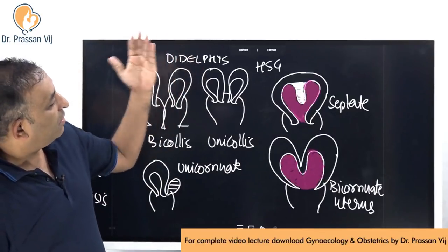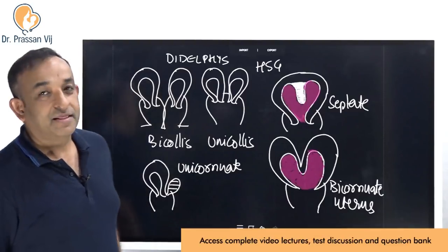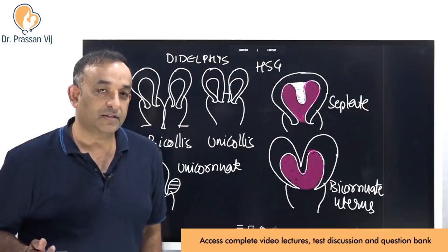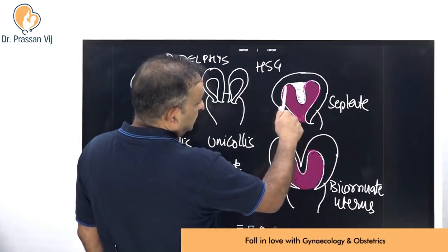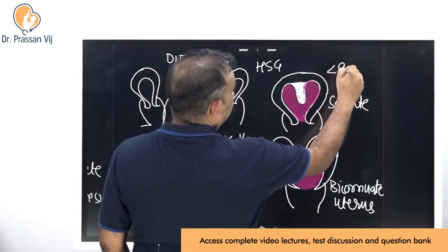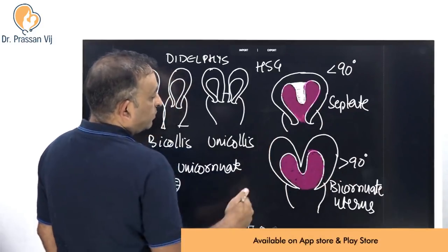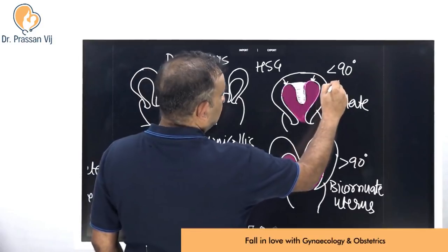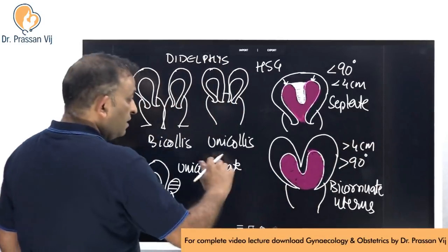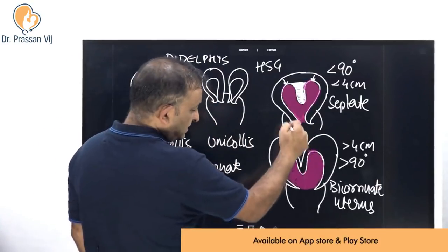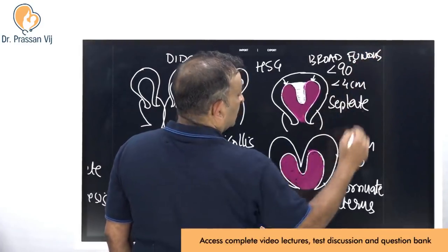There are various radiological signs: the angle between the two cavities is less than 90 degrees in a septate uterus and more than 90 degrees — obtuse — in a bicornuate uterus. The distance between the two cavities is less than four centimeters in a septate and more than four centimeters in a bicornuate. The fundus of the uterus is dimpled with indentation in a bicornuate and broad in a septate.